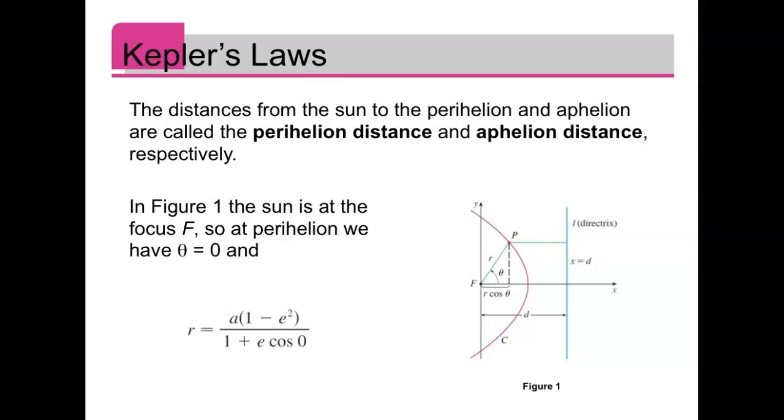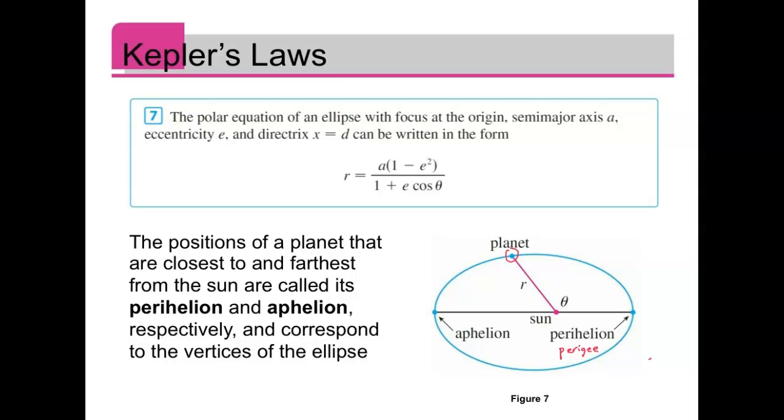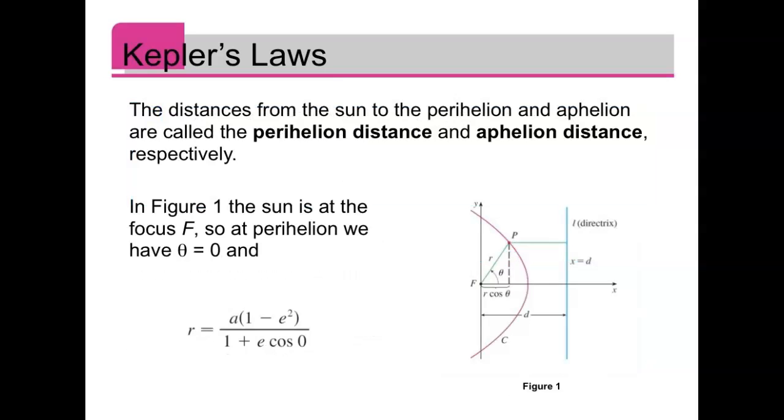From this diagram that's the planet and this is the orbit, so this would be the perigee and this is the aphelion.